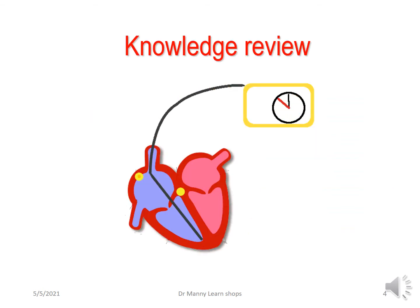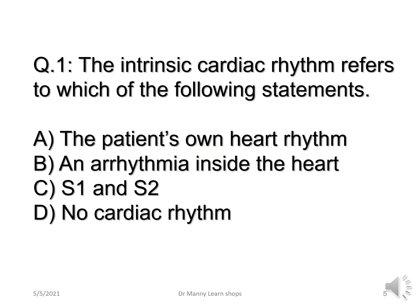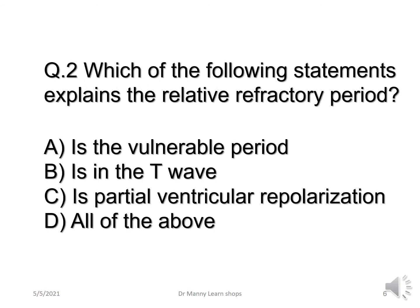Let's review our knowledge again just to reinforce. Intrinsic cardiac rhythm refers to which of the following statements? The correct answer is the patient's own heart rhythm. Question two: which of the following statements explains the relative refractory period? A, the vulnerable period; B, in the T wave; C, partial ventricular repolarization; or D, all of the above? The correct answer is all of the above.